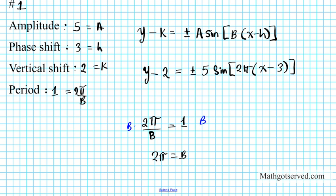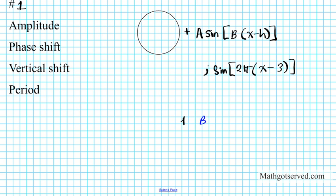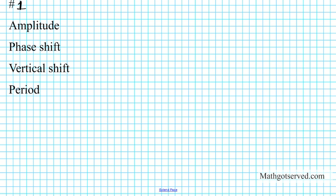Now let's take a look at another example. What if we have the following situation? For number 2, the amplitude is 7, the phase shift is negative 3, the vertical shift is negative 2, and the period is 4.